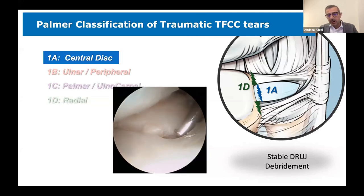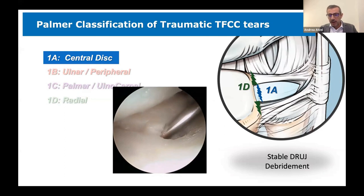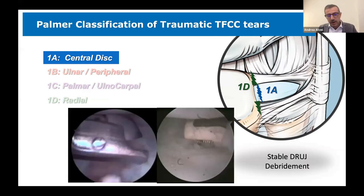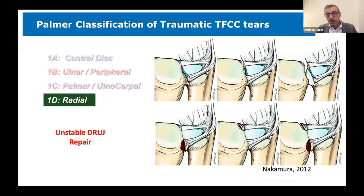What is the clinical relevance? In the 1A tear, you have a stable DRUJ and the only treatment is debridement of the cartilaginous tissue, which is not going to heal even if you try to repair it. In contrast, in a 1D tear you have the radial avulsion of the distal radio-ulnar ligament, and that should be repaired.